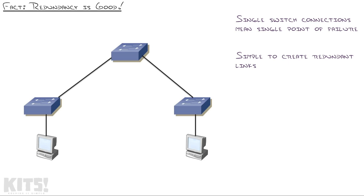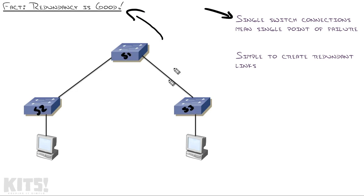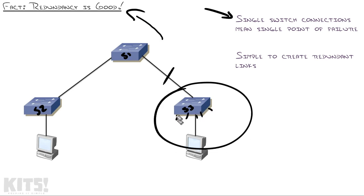Spanning Tree Protocol is designed around the fact that redundancy is good. Single switch connections mean a single point of failure. If I've got Switch 1, Switch 2, and Switch 3 in this picture, and this cable breaks, then all of the clients attached to Switch 3 can no longer access the rest of the system. That's not good at all.